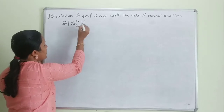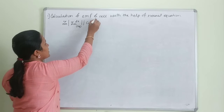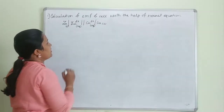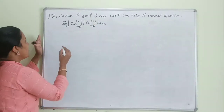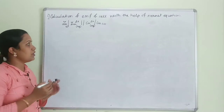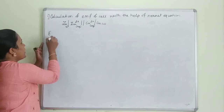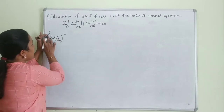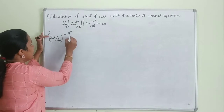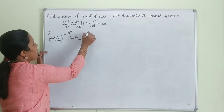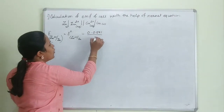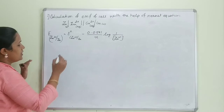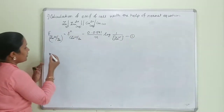Consider a general electrochemical cell — the Zn-Cu cell, which we have studied before. I will write the individual electrode potential equations using the Nernst equation. For the Zn²⁺/Zn electrode: E(Zn²⁺/Zn) = E°(Zn²⁺/Zn) − (0.0591/n) × log(1/[Zn²⁺]). This is equation 1. For the Cu²⁺/Cu electrode: E(Cu²⁺/Cu) = E°(Cu²⁺/Cu) − (0.0591/n) × log(1/[Cu²⁺]). This is equation 2.